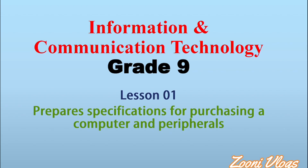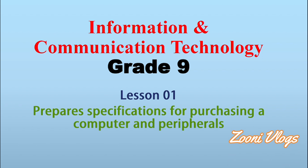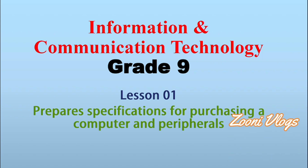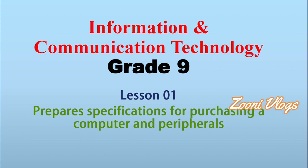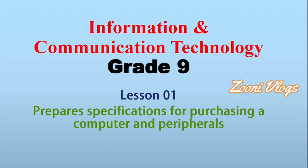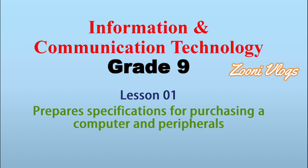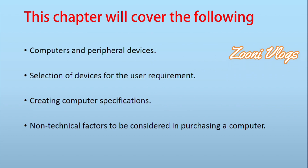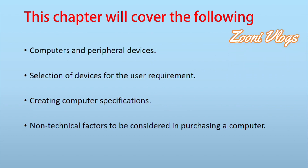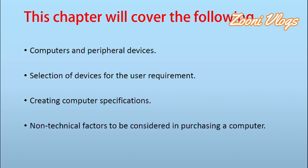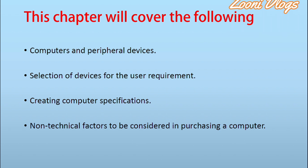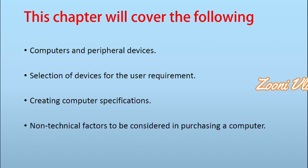Hello everyone. Today I'm going to start from a Grade 9 Information and Communication Technology book. The first lesson is 'Prepares a Specification for Purchasing Computer and Peripherals.' From this chapter we'll cover the following: computers and peripheral devices, selection of devices for a user requirement, creating computer specifications, and non-technical factors to be considered in purchasing a computer.